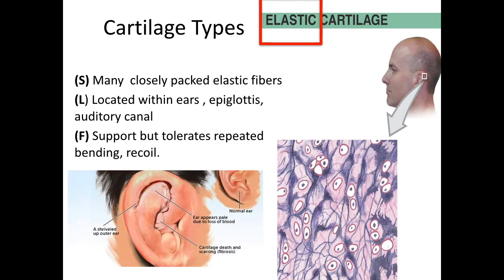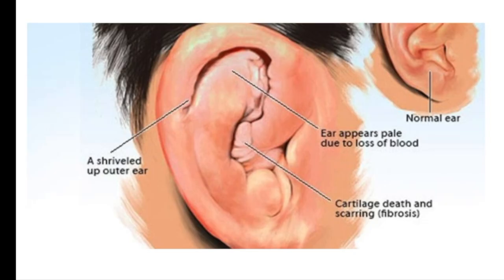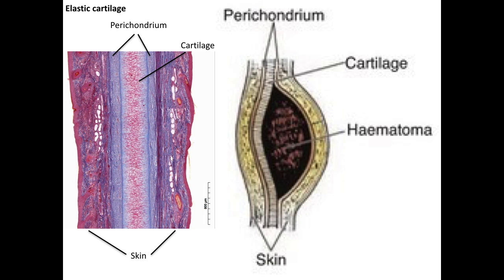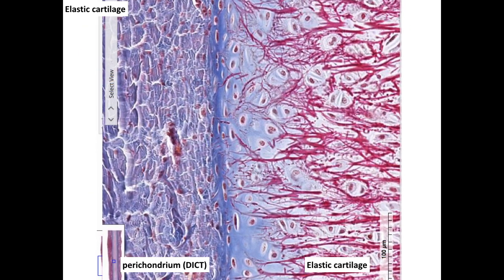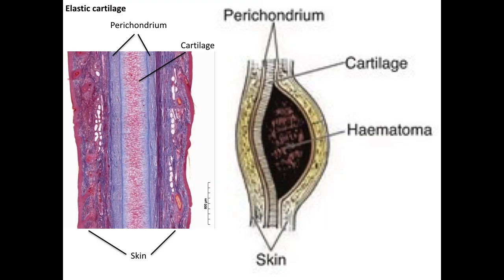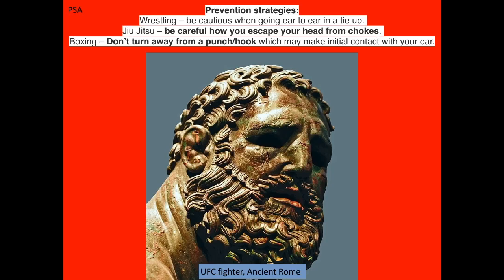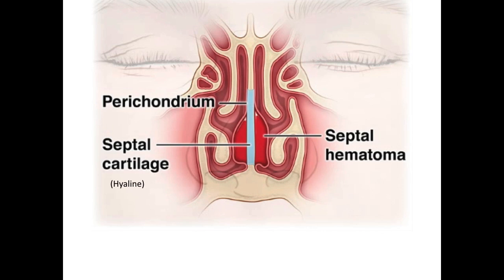The last type of cartilage contains closely packed elastic fibers, which offer a supporting structure but also tolerate repeated bending with the ability to return to the original shape. As a fun fact, you've probably seen what's called a cauliflower ear, especially if you watch MMA or boxing. Technically this is referred to as an auricular hematoma — an accumulation of blood between the cartilage tissue and the perichondrium. The hematoma can stimulate new growth of cartilage and fibrous tissue, but the new cartilage and replacement fibrous tissue is often distorted and asymmetric. To avoid cauliflower ear, you want to think about how to escape from a chokehold and also not turn away from a punch to the face. On the other hand, this may result in a septal hematoma in the hyaline cartilage of your nose.